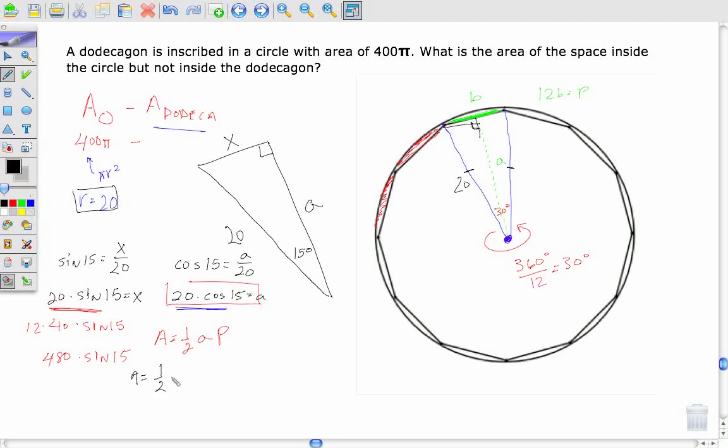Area is equal to one-half times 20 times cosine of 15 times my perimeter, which is right here, 480 sine of 15.